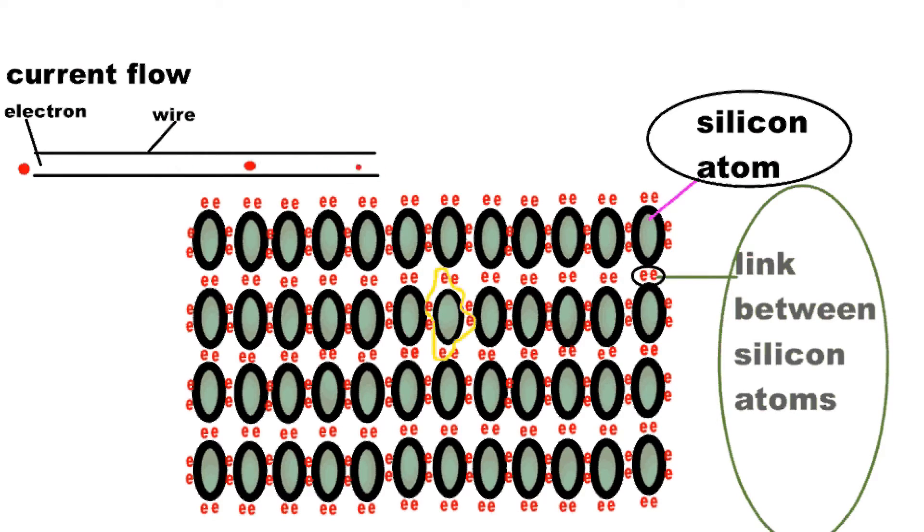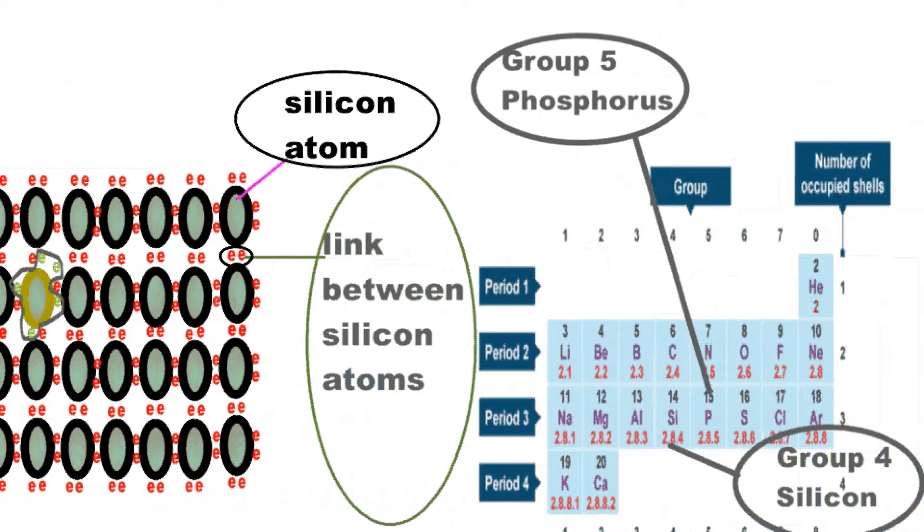Step 1: Remove a silicon atom and replace it with a phosphorus atom. Note that phosphorus, being a group 5 element, has 5 outer electrons, while silicon, being a group 4 element, has just 4 outer electrons.